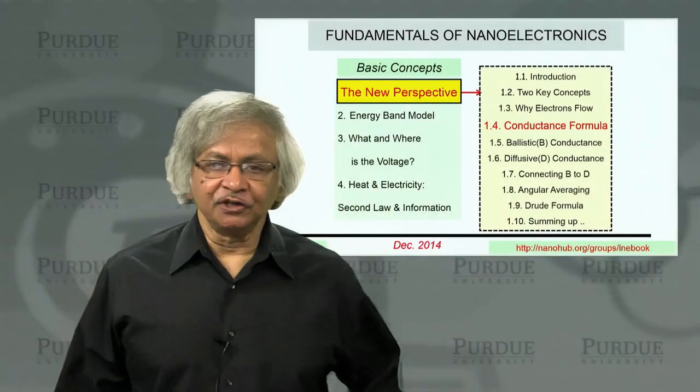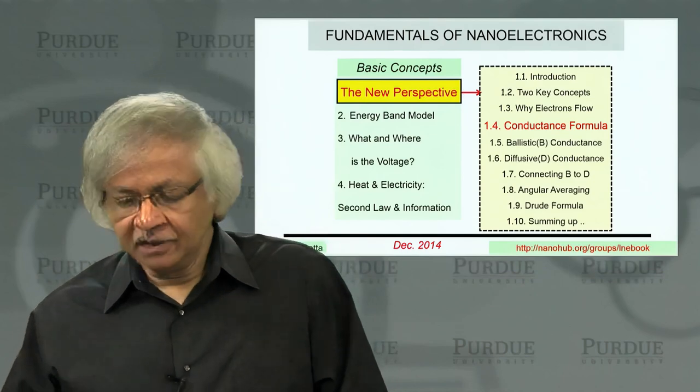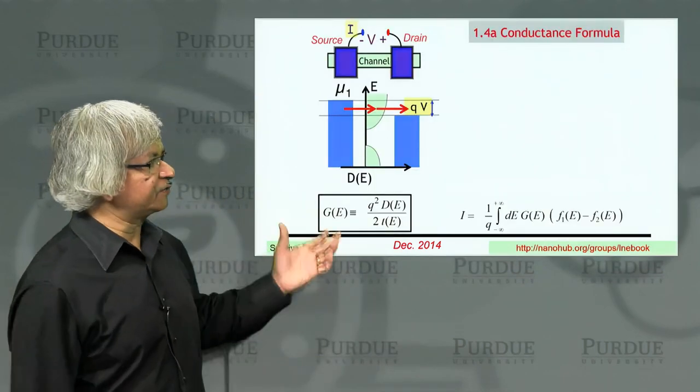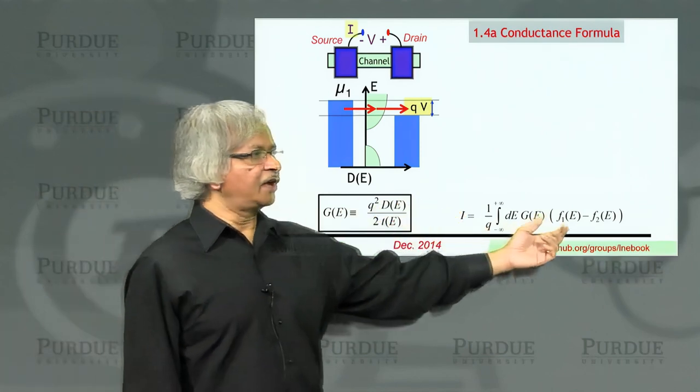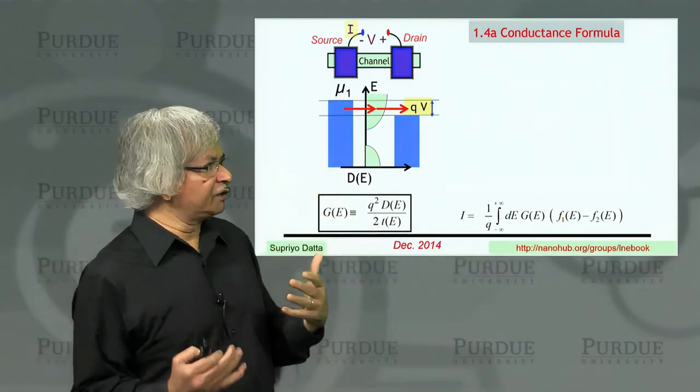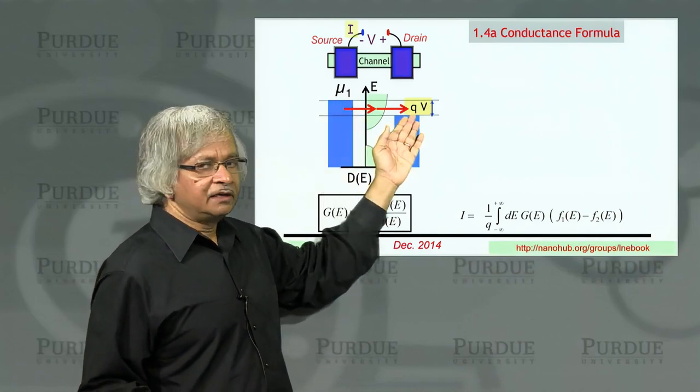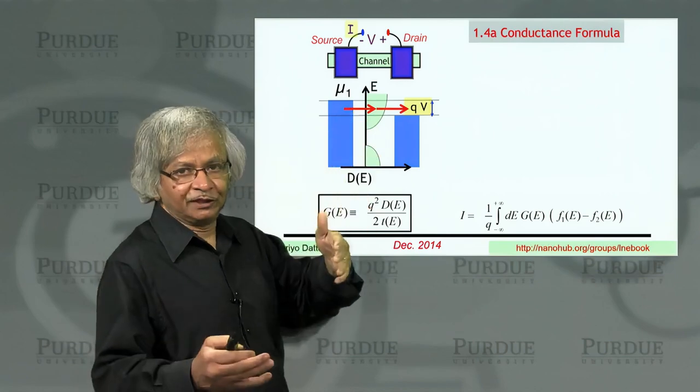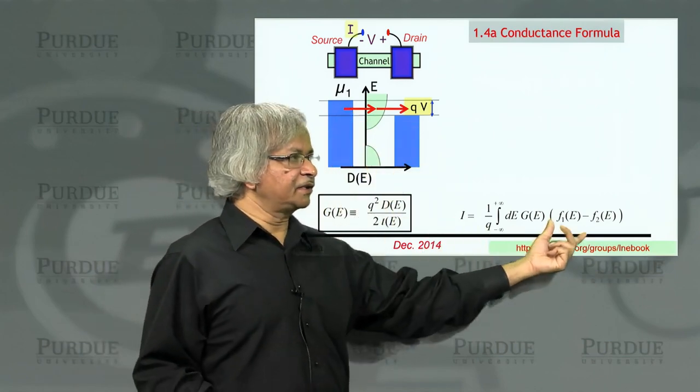Welcome back to the first unit of our course, and we are now on the fourth lecture. In the last lecture, we obtained an expression for the current. This current depends on F1 minus F2, and that is the point I had explained physically earlier. Current flows only because the two contacts have two different Fermi functions—one wants to fill it up, the other wants to empty it—and the current that flows depends on the difference.